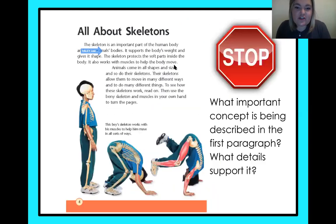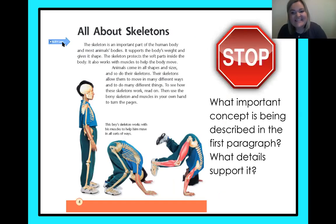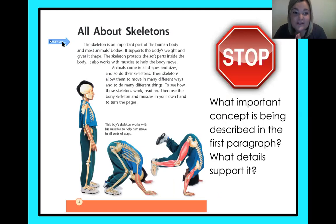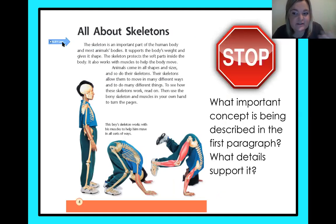We're just reading the introduction. As I say that, there's a big stop sign there, which means we need to stop and read that question: What important concept is being described in the first paragraph? Remember, the important concept is the big idea. We're going to read this first paragraph and think in our heads: what is the big idea? And then we're going to have to find some supporting details. So keep your magnifying glasses out to look for that while we read.